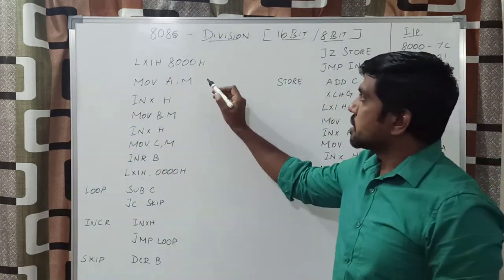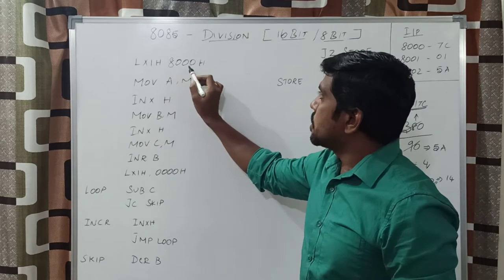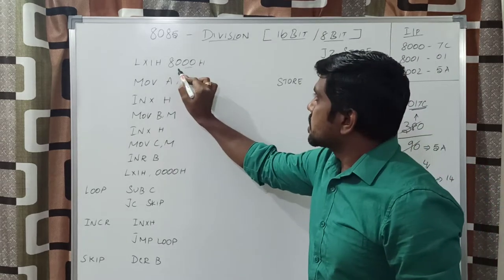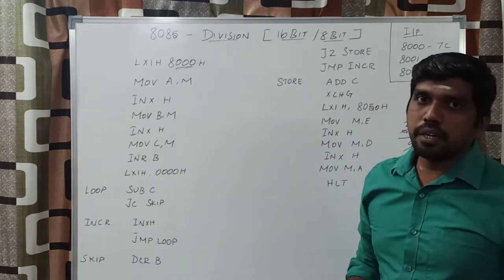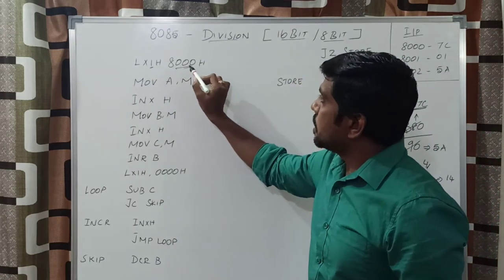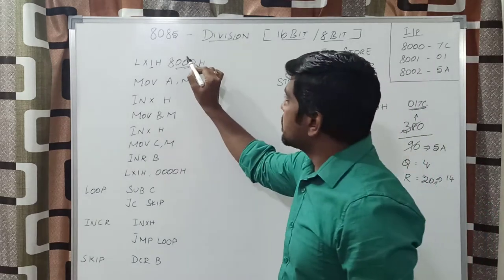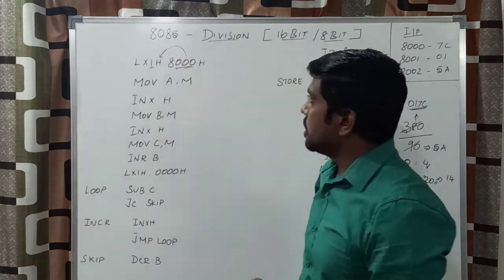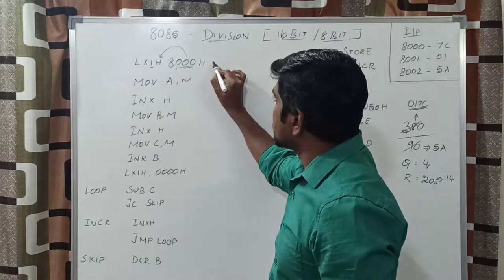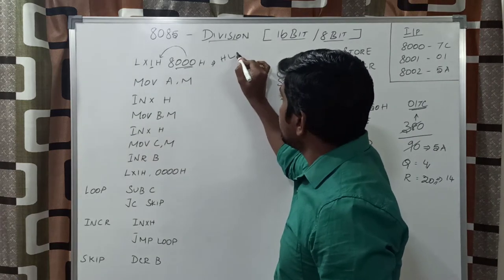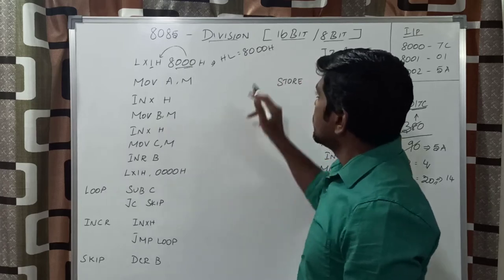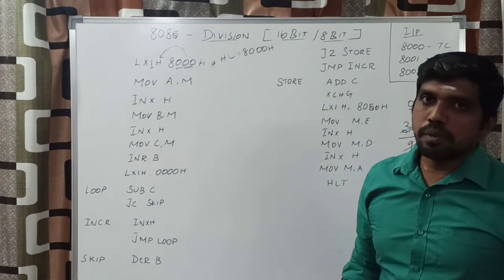The beginning instruction is LXI H, 8000h. This 16-bit content is considered as an immediate value. This data is transferred to the HL pair register. After execution of this instruction, the HL pair value is 8000h. This content is transferred to the HL pair.